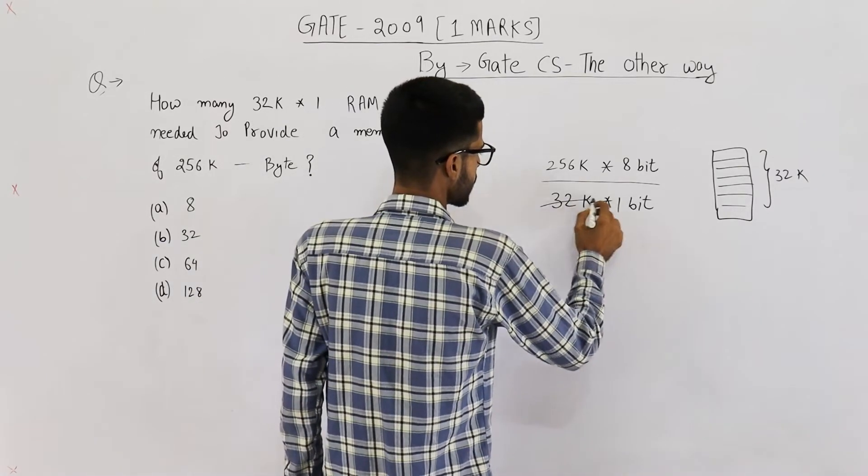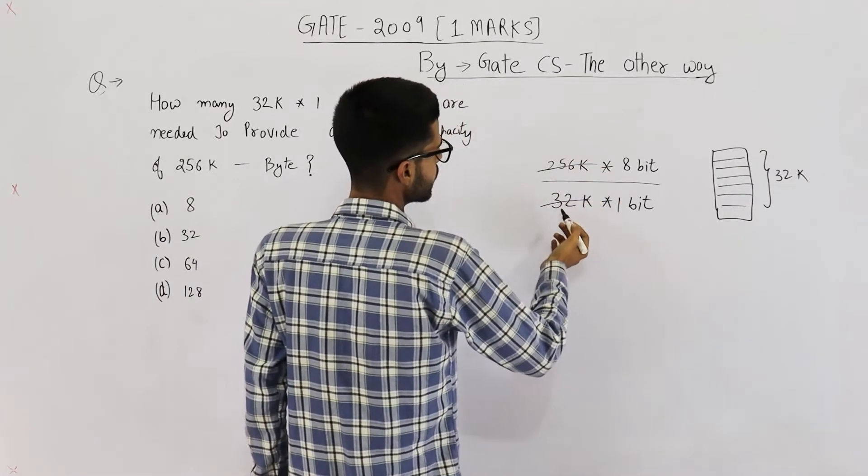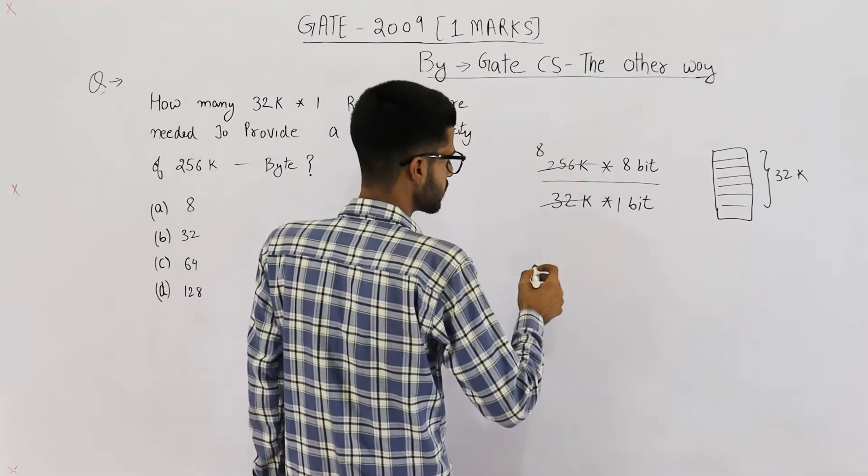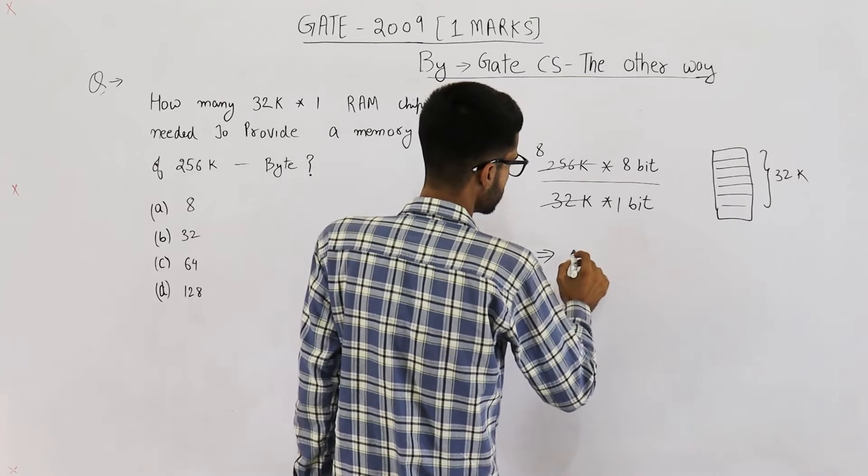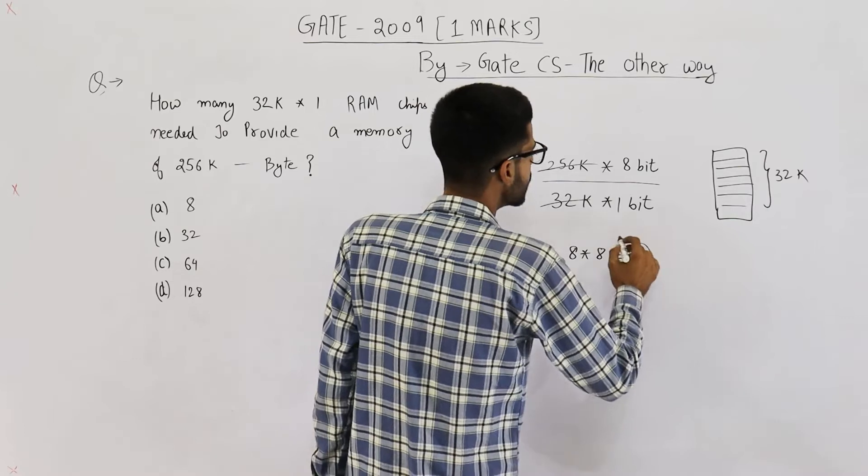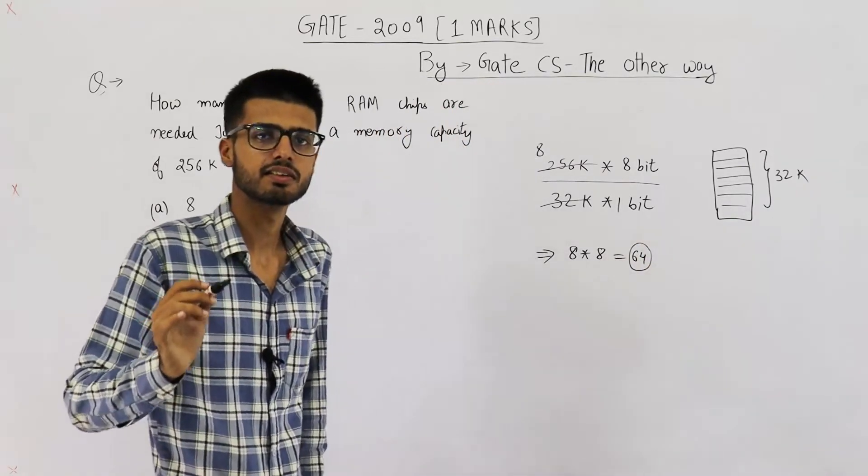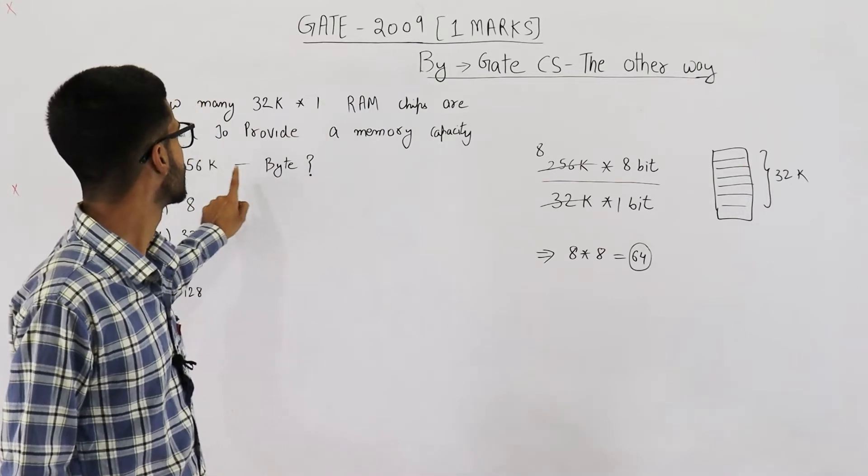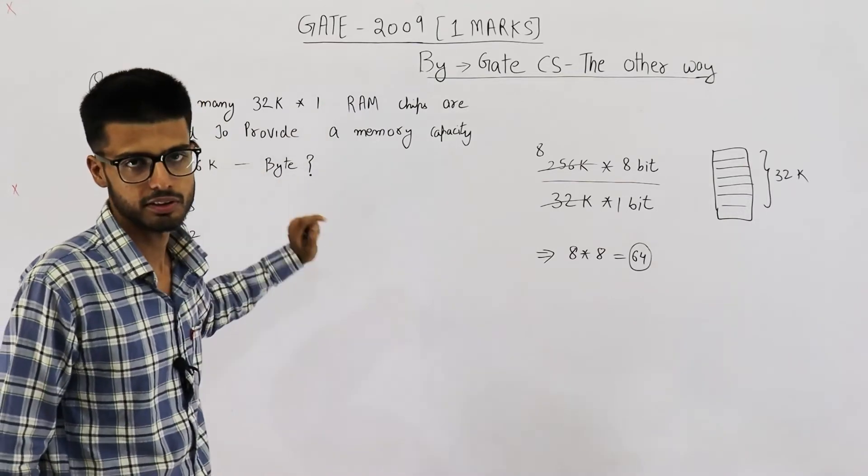This will be 32 into 8 will be 256. Yeah, so you will be left with 8 x 8. This is 64. So you actually need 64 such chips to construct one such memory chip.